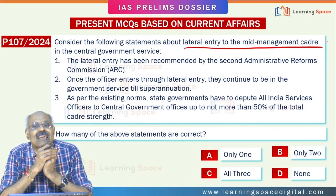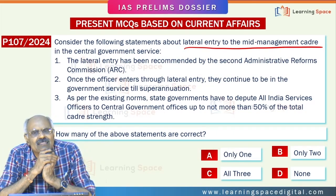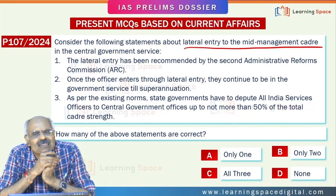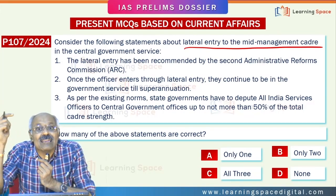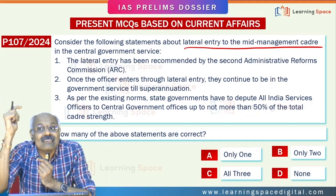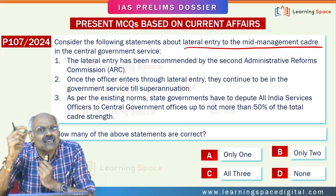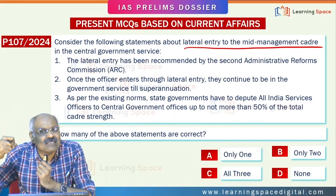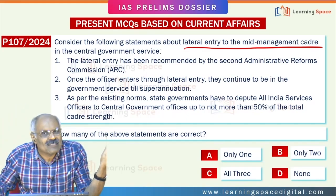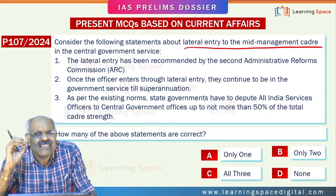Regarding lateral entry to the mid-management cadre: a notification for 45 posts was issued by UPSC, but there was strong opposition even from coalition partners due to concerns about reservations, and the government withdrew the notification. These 45 posts were at the deputy secretary level (9 years of IAS service), director level (14 years), and joint secretary level (19 years), for a period of three to five years.